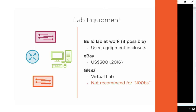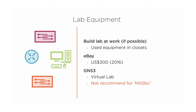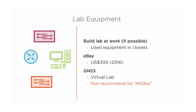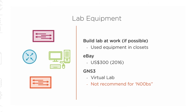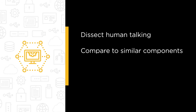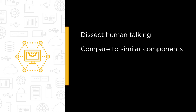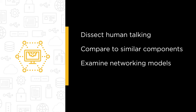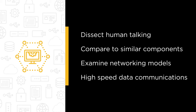In this course, we're going to dissect how humans communicate and introduce an organizational system to make all future understanding of data networking operation much easier. Some of the major topics we will cover are dissecting human communication into fundamental components, and we'll compare those components to similar components in data networking. We'll also examine networking models used to categorize networking components and briefly examine the history and the birth of high-speed data communications.